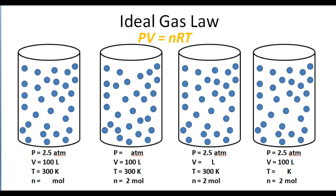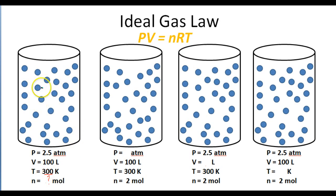Let's take a look at an example. We have four different containers, each filled with gas particles and an unknown variable. In the first container, pressure is 2.5 atmospheres, volume is 100 liters, temperature is 300 K — we'd solve for moles. In the second, if we know volume, moles, and temperature, we can calculate pressure. In the third, knowing pressure, temperature, and moles, we can calculate volume.